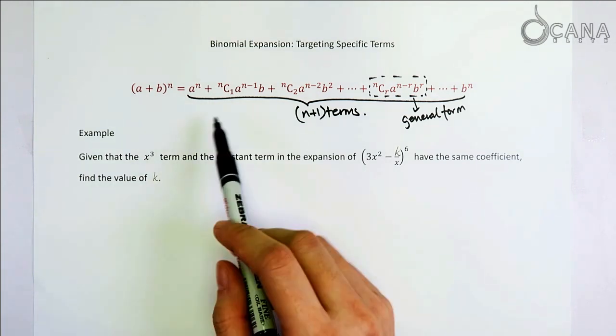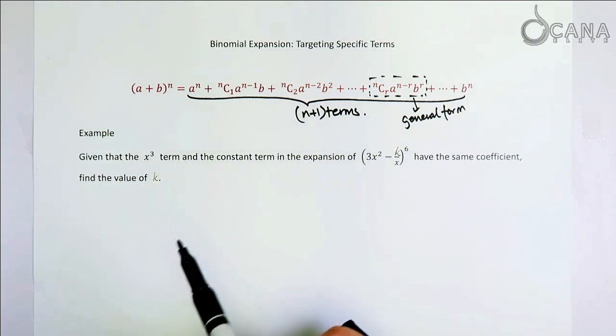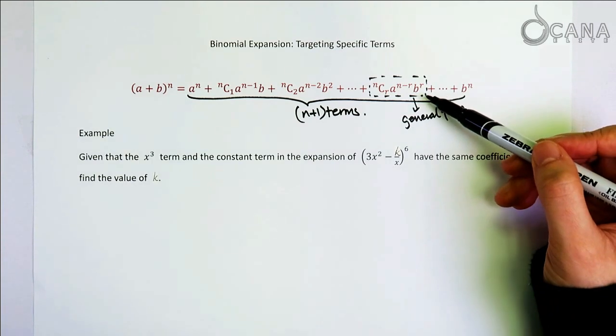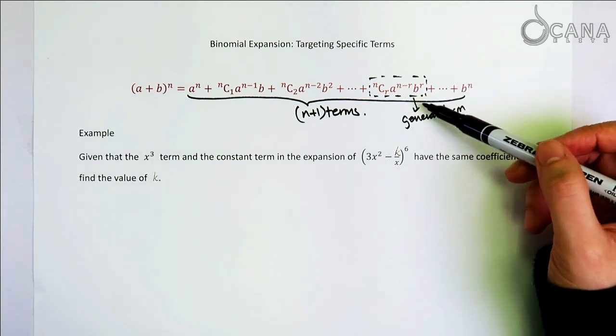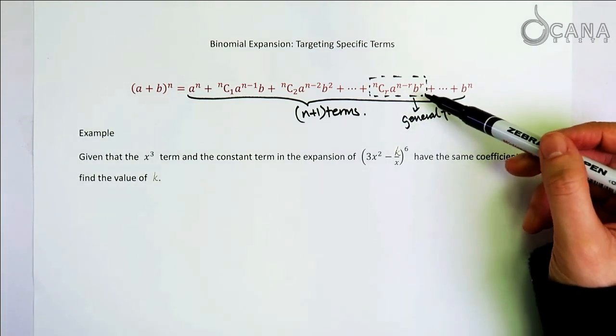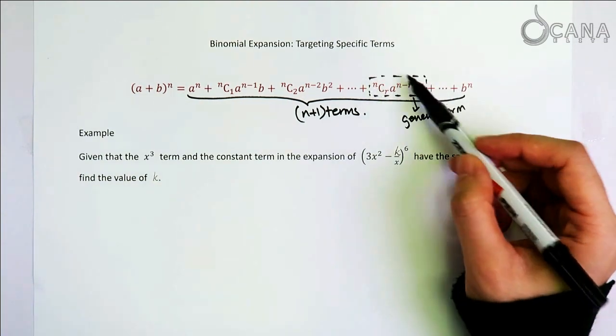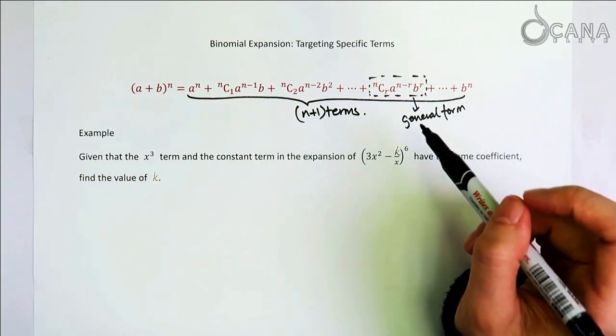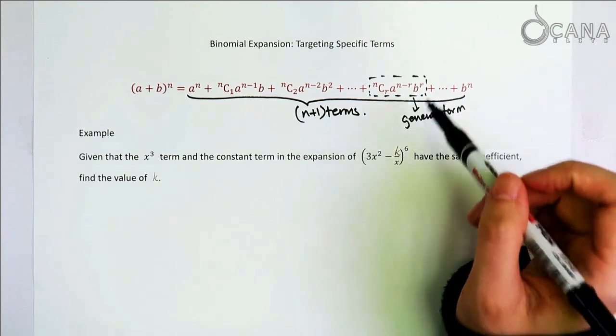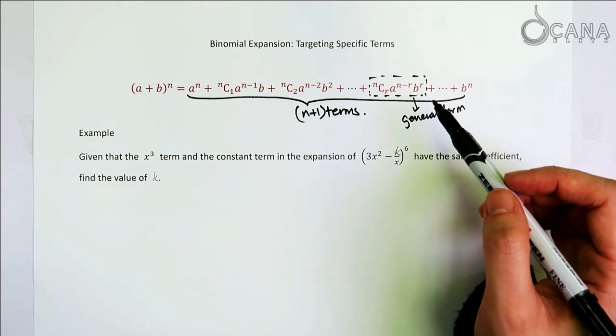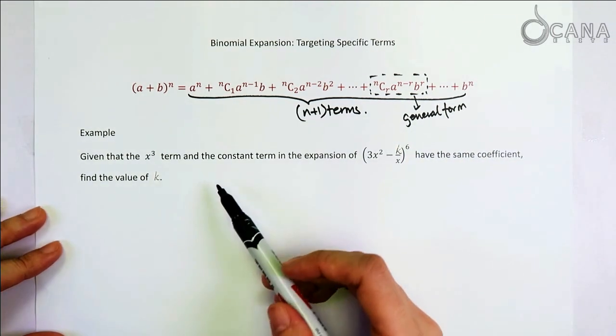That means we shouldn't follow this entirely and then use them all. What we should do is actually to just focus on this term. This gives us the general form of a term in the expansion. And this formula here already tells us how to target at a specific term. So let's try to apply this on a past paper style example.